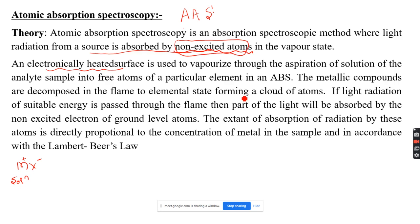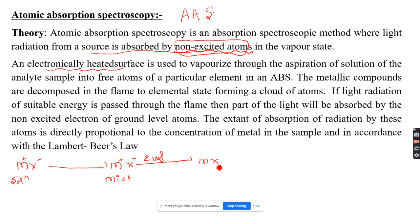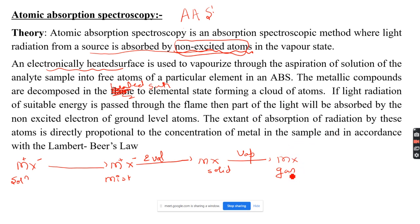In atomic absorption spectroscopy, the metallic compounds are decomposed in the flame or on the heated surface to an elemental state, forming a cloud of atoms. When you aspirate the components over an electronically heated surface, M⁺X⁻ undergoes evaporation, forming a solid component, which then gets vaporized to form a gaseous component. Here we are not using a flame — the sample is decomposed on the heated surface into elemental form, forming a cloud of gaseous atoms.